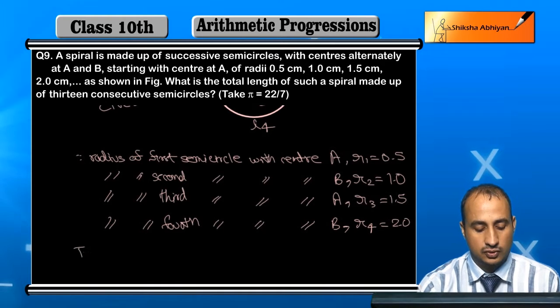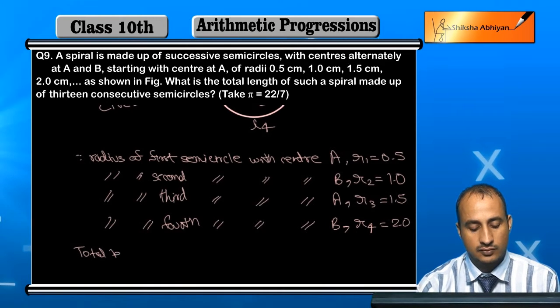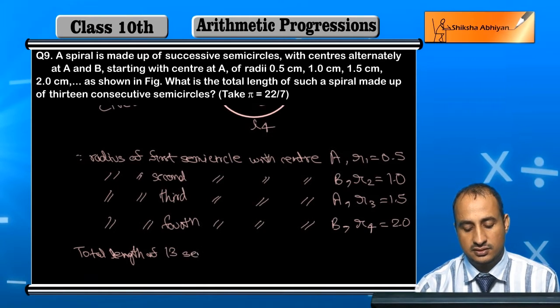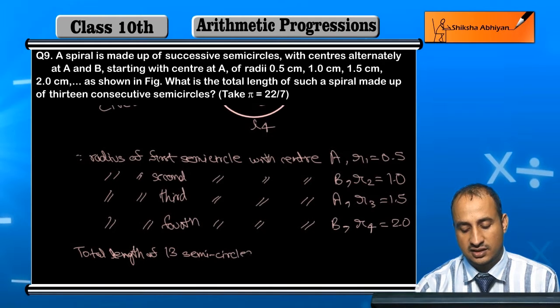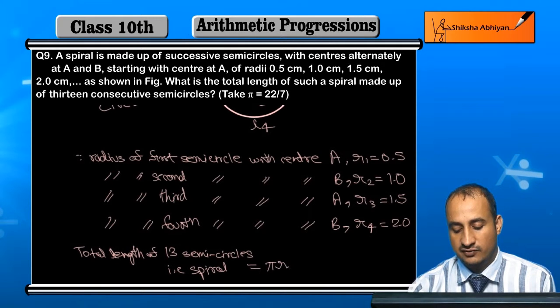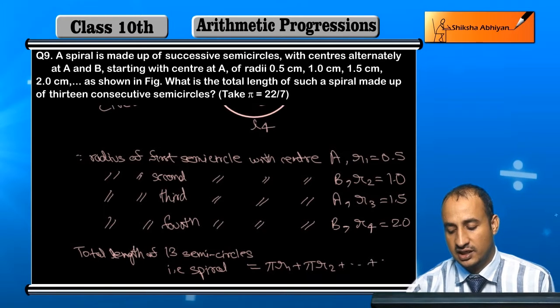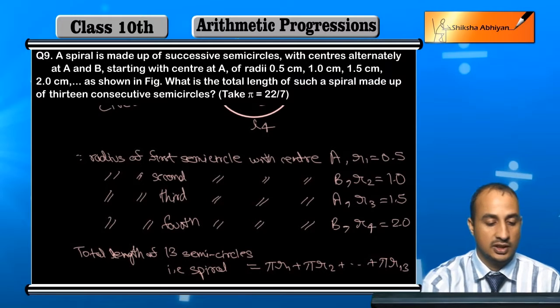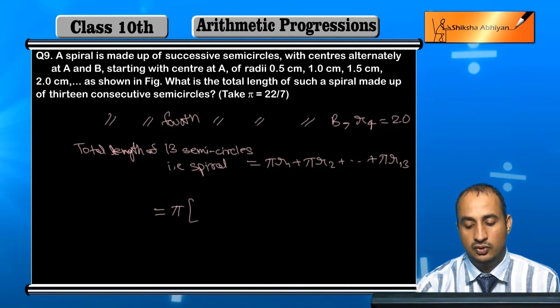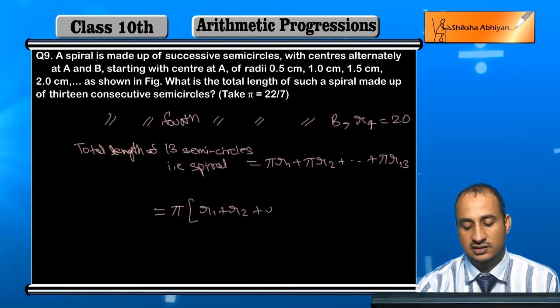Now, I will take the total length of 13 semicircles. That is spiral. What will happen? This will be pi R1 plus pi R2 plus up to pi R13. So at other points there will be pi taken common. I will take pi times R1 plus R2 plus R3.